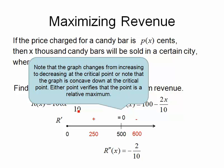So, since we now know that the graph changed from increasing to decreasing at the critical point, and that it was concave down at the critical point, we now know that 500, x = 500, is the relative maximum. In this case, remember that it was in thousands of candy bars, so this maximum actually occurs at 500,000.